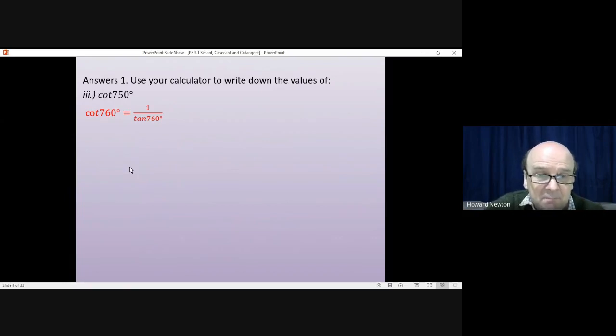Cotangent is 1 over tan, so you need to look up tan 760 on the calculator. The calculator will have no problem with that. It should give you about 0.839, which is 1.19 to three significant figures.